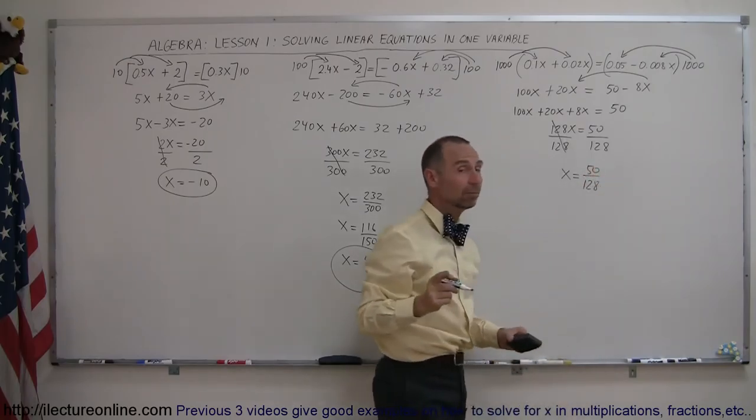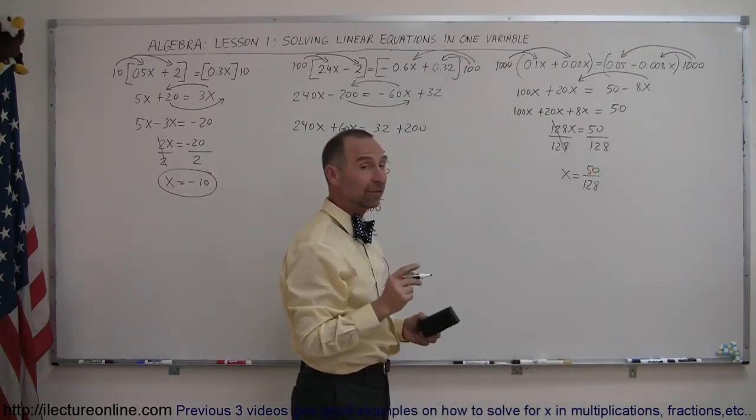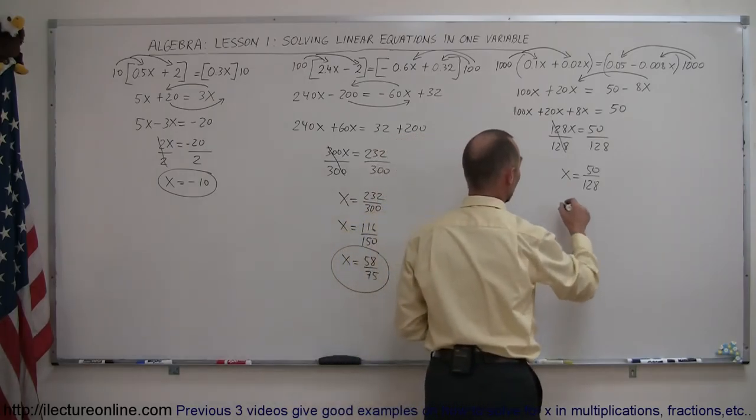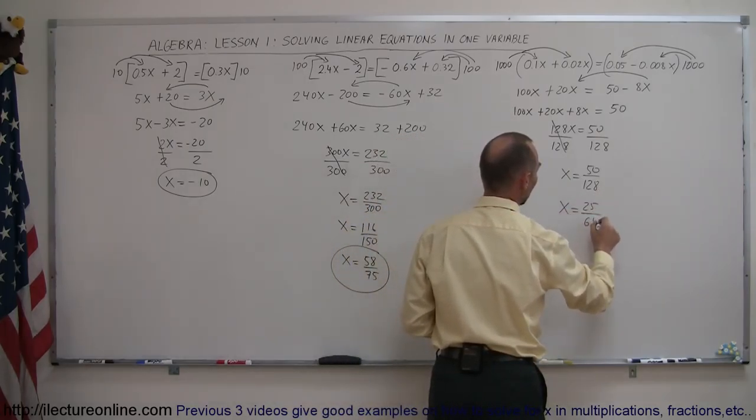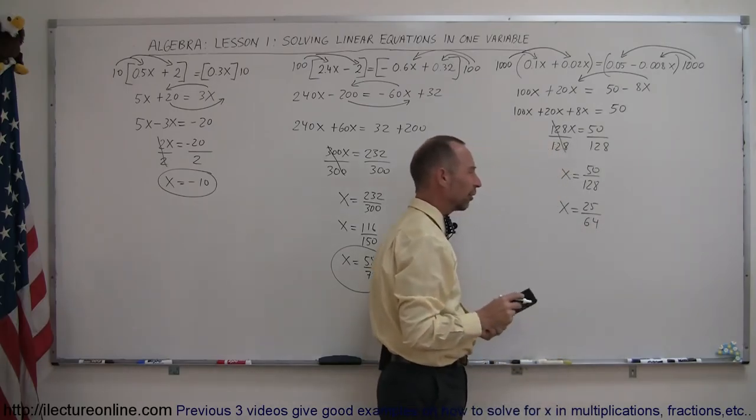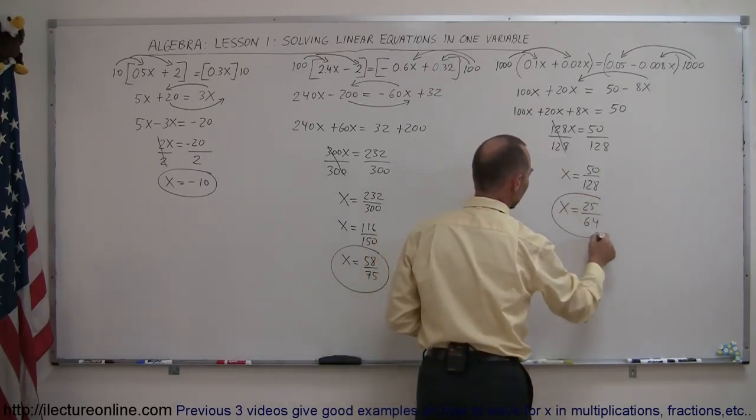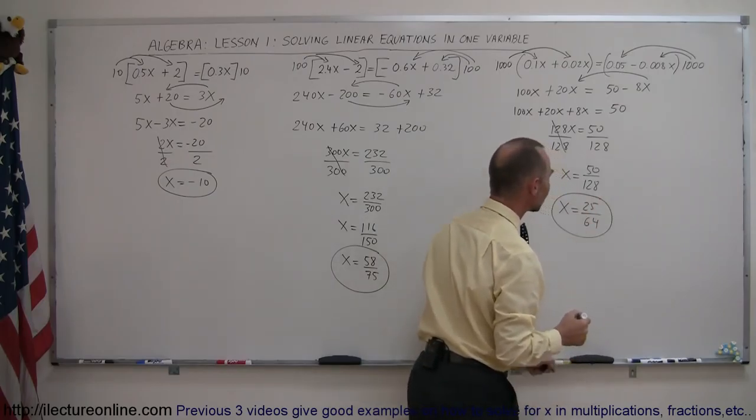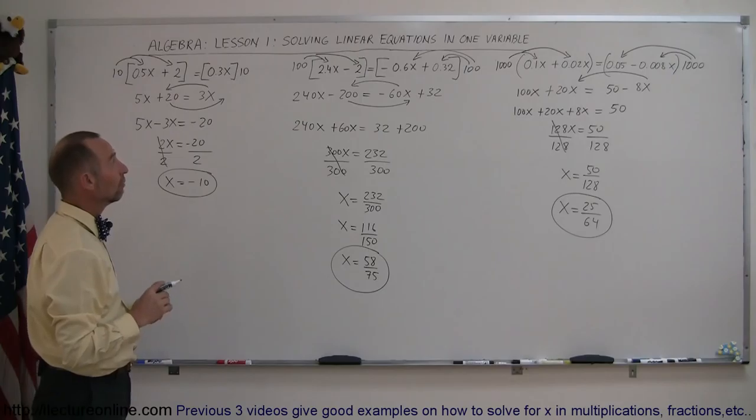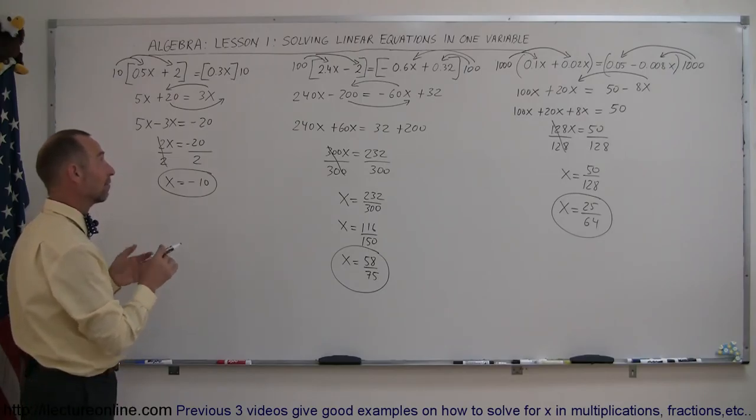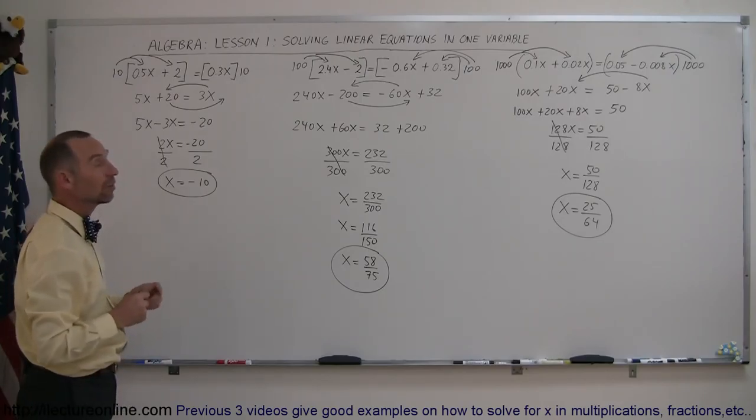We can now combine all like terms, so this is 128x is equal to 50, so x is equal to, and again, I'm getting a little lazy here, shouldn't do that, I should write that I divide both sides by the number in front of the x, like so, so you can see that that cancels out. x is equal to 50 divided by 128. Again, both the numerator and denominator are even, that means they can be divided by 2, so x is equal to 25 divided by 64.